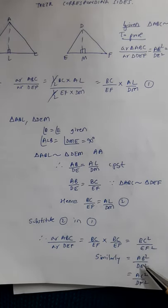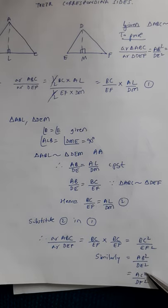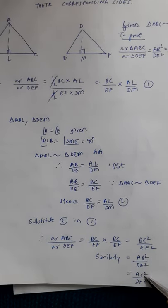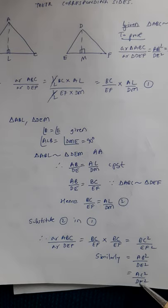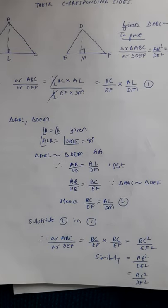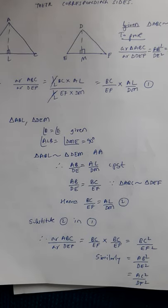Similarly, it is equal to AB square by DE square, and also equal to AC square by DF square, because triangle ABC and DEF are given similar, so AB by DE, BC by EF, and AC by DF are all equal. That is the proof, and this can be asked as a format question.